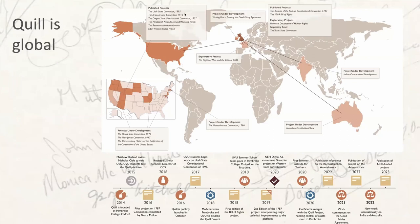We've come a long way from Nicholas's early work, and Quill is now very much a global project. That's the first thing we really want you to take away today: you're part of something really big — a big global Quill family. We now have projects and collaborations in four continents, with major research projects in the US, Australia, India, and Ireland.